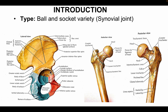This is known as the acetabulum. This is known as the lunate surface of the acetabulum. This is known as the margin of the acetabulum. The notch present here is known as the acetabular notch. This is the anterior superior iliac spine and this is the anterior inferior iliac spine. In the anterior view of the proximal femur we have the greater trochanter, lesser trochanter, and the intertrochanteric line. In the posterior view we have the greater trochanter, lesser trochanter, and the intertrochanteric crest.